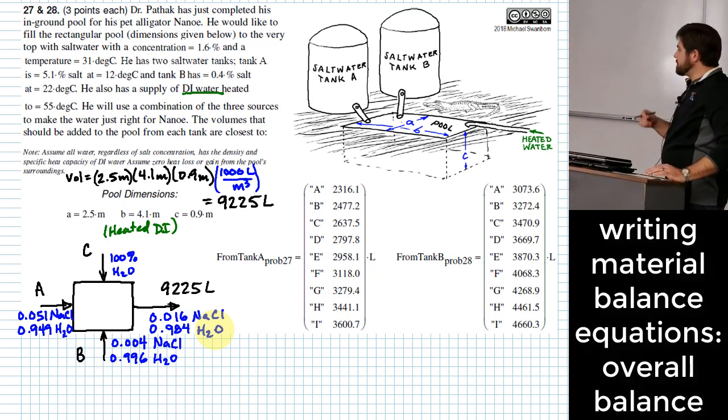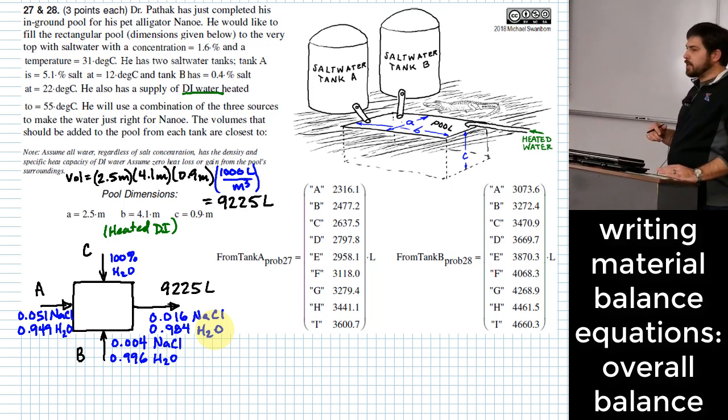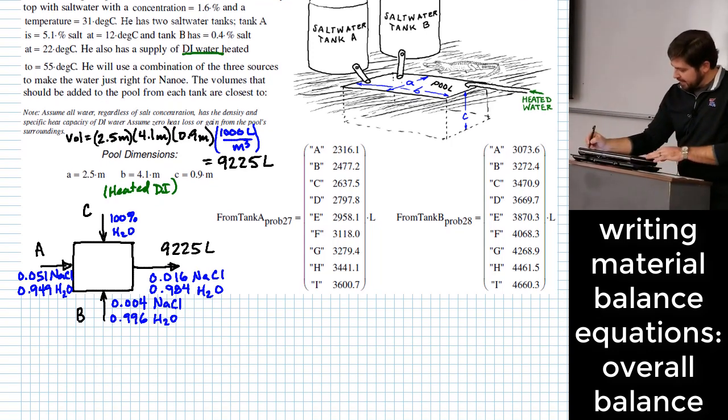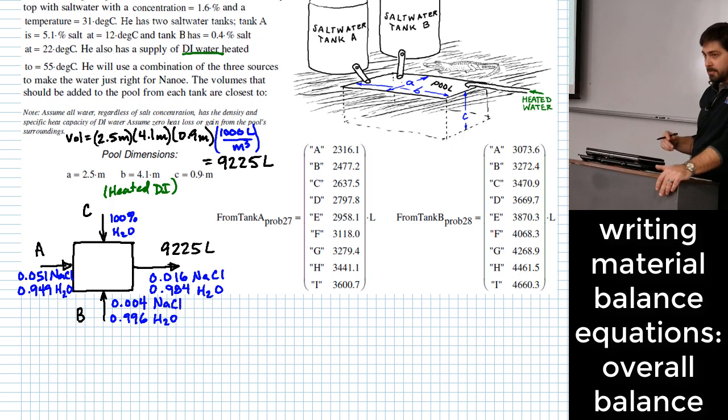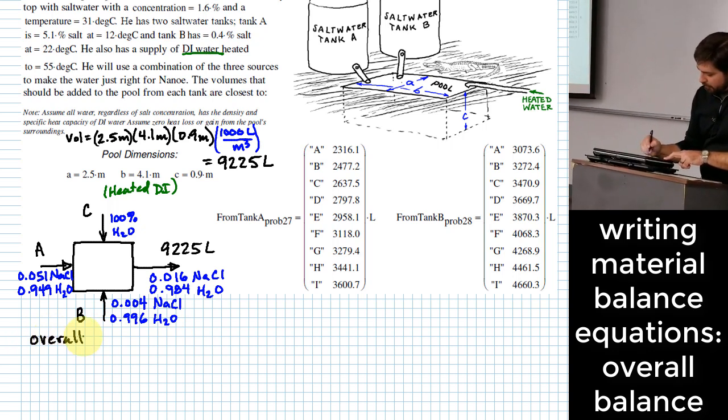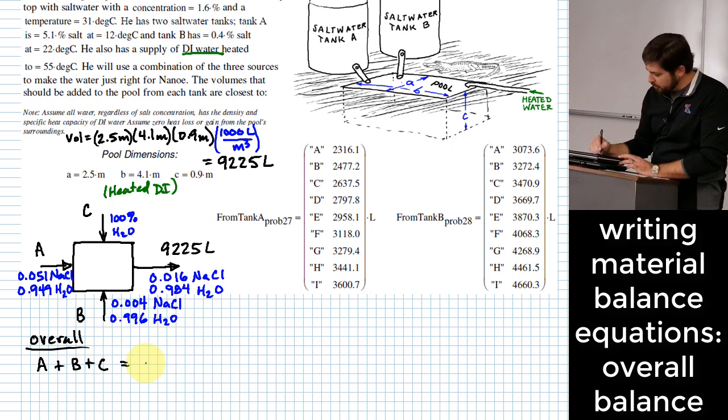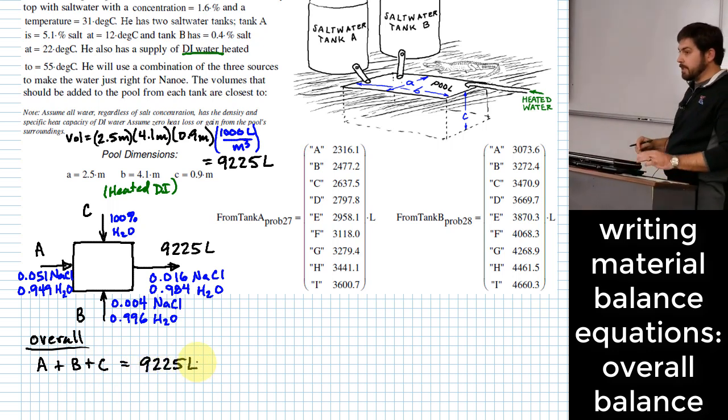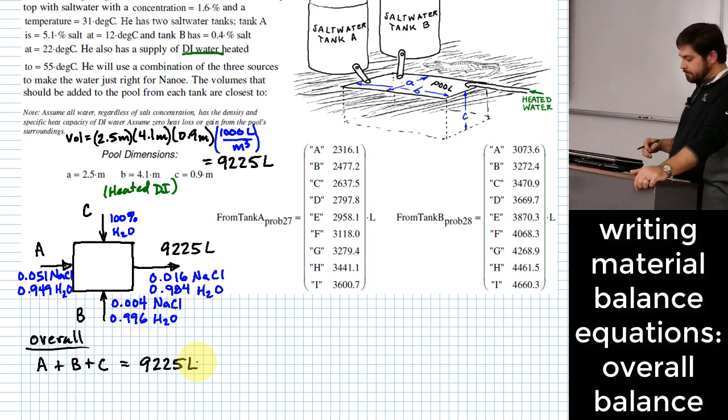So you might be noticing here that we have a system that has three unknowns. So there's no problem with us going ahead and writing some equations in terms of some of the items that we know. So for instance, what kind of a mass balance can we write? Overall. So the overall equation says A plus B plus C is going to be equal to 9225 liters. And I'll just leave it in terms of liters, the volume, because of the constant densities.